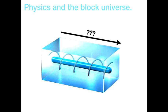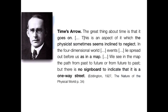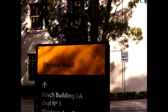There's been loads written about the block universe — Einstein says that the distinction between past, present, and future is only a stubbornly persistent illusion, suggesting that relativity theory tells us time is a four-dimensional thing. There's been less written about whether or not this block has some arrow on it. Eddington coined the term 'the arrow of time.' He says in the four-dimensional world, events lie spread out in a map, and we see the path from past to future or from future to past, but there's no signboard to indicate that it's a one-way street. So the fundamental physical description of the world doesn't really tell us that things are going from past to future as opposed to future to past.